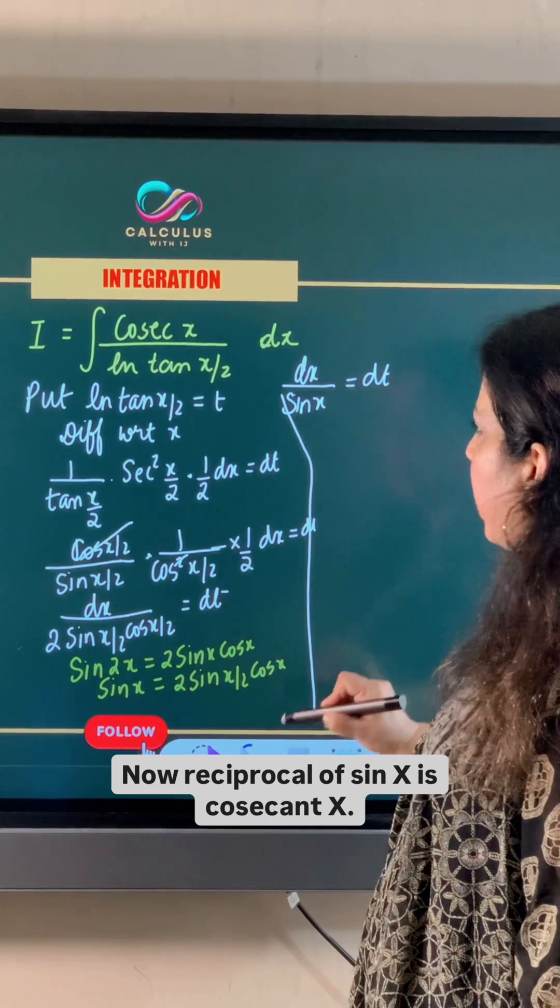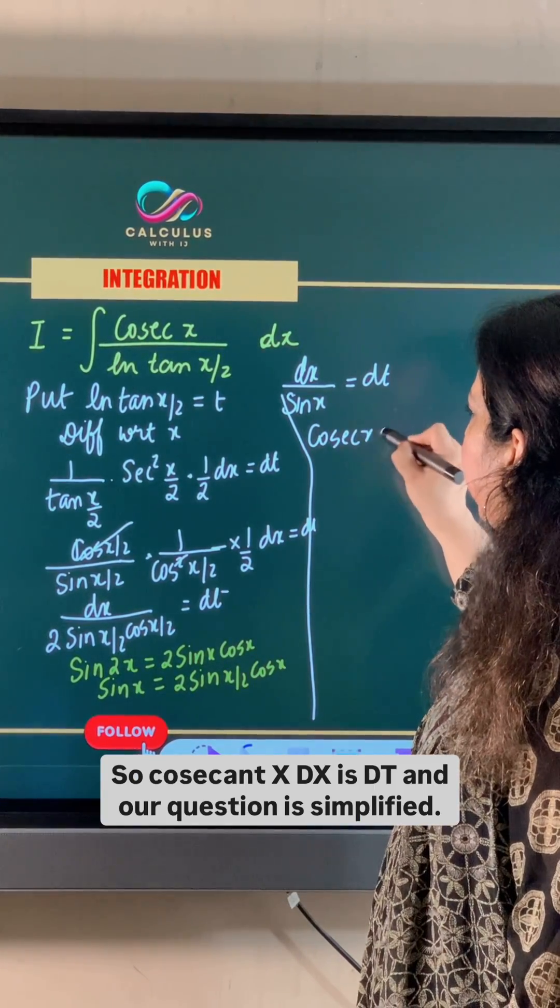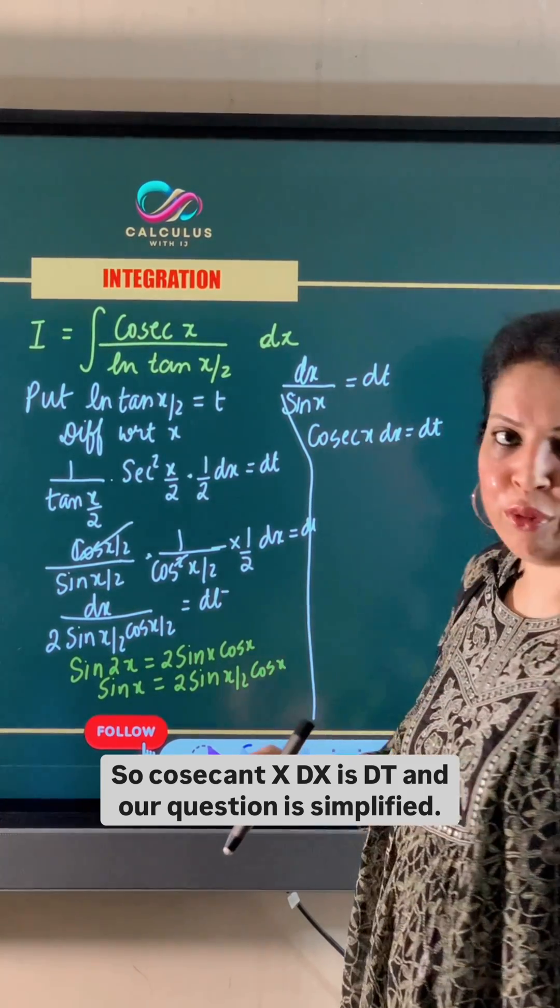Now reciprocal of sin x is cosecant x. So cosecant x dx is dt and our question is simplified.